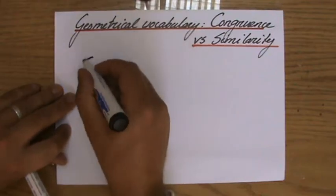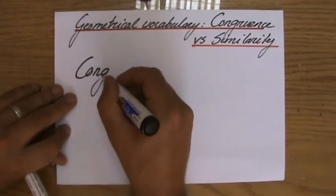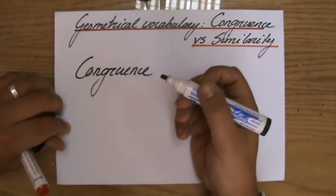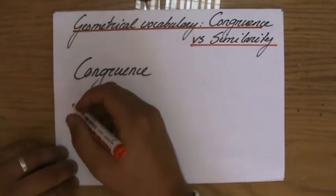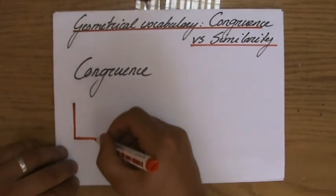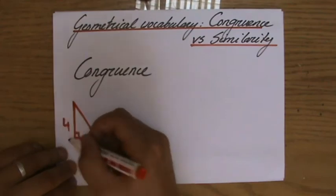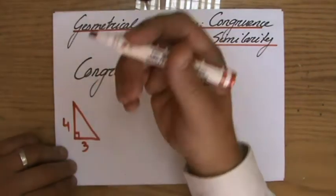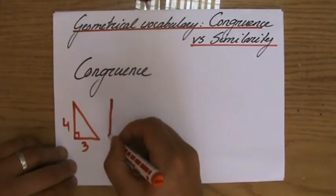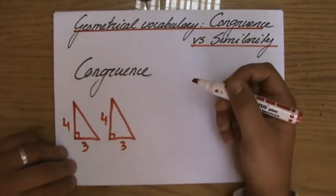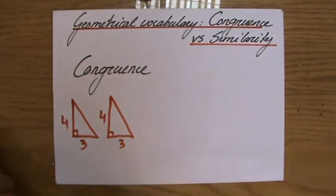Congruence. Congruence is a fancy word which means, if you like, exactly the same. So if I have a triangle, for instance, this right-angle triangle, 3 and 4, then a congruent triangle is a triangle which is exactly the same, so also 3 and 4. That's congruence. Exactly the same.